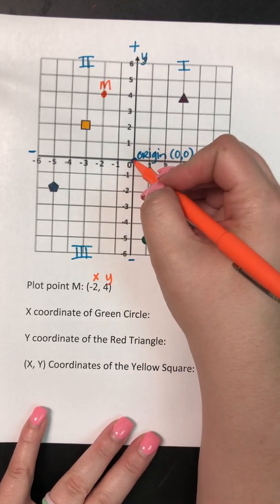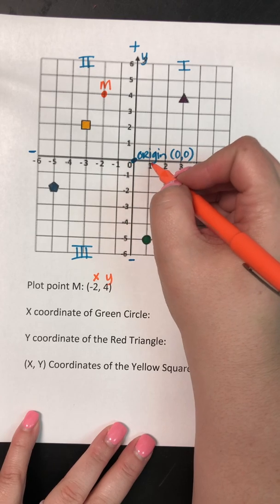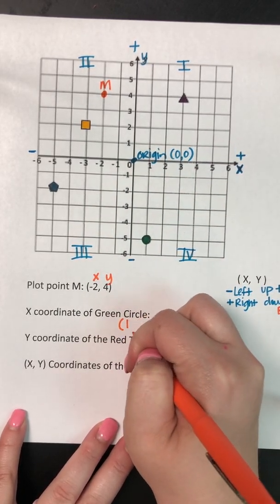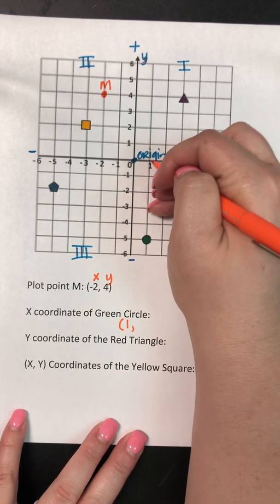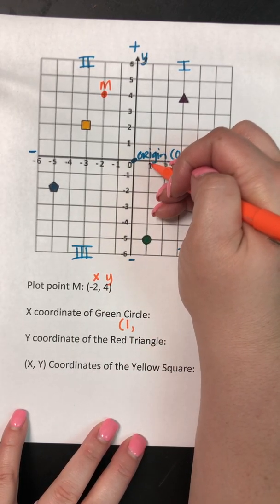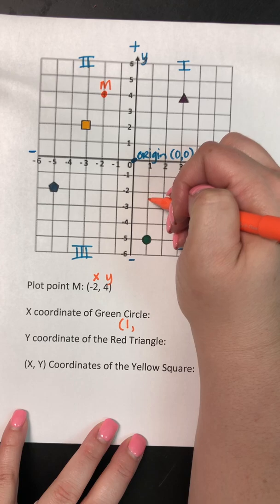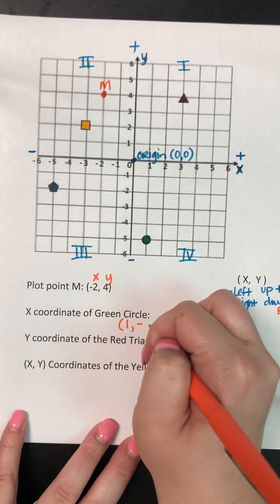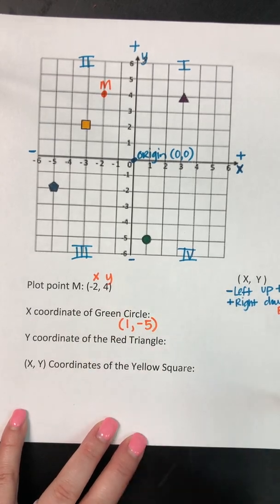So first I'm gonna start at my origin and I'm gonna walk to 1. So my starting point will be 1. And then I'm gonna take it downstairs, the elevator, so 1, 2, 3, 4, 5. So because I went down, it's negative 5.